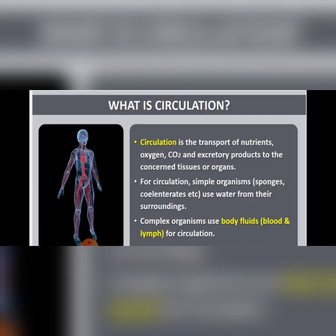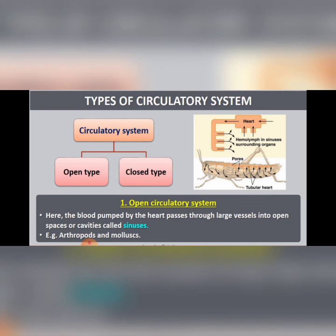Now let us discuss the definition of circulation. Circulation is the transport of nutrients, oxygen, carbon dioxide and excretory products to the concerned tissues or organs. For circulation, simple organisms like sponges and cnidarians use water from the surrounding environment as the surrounding media. But in complex organisms, it uses body fluids like blood and lymph for circulation.